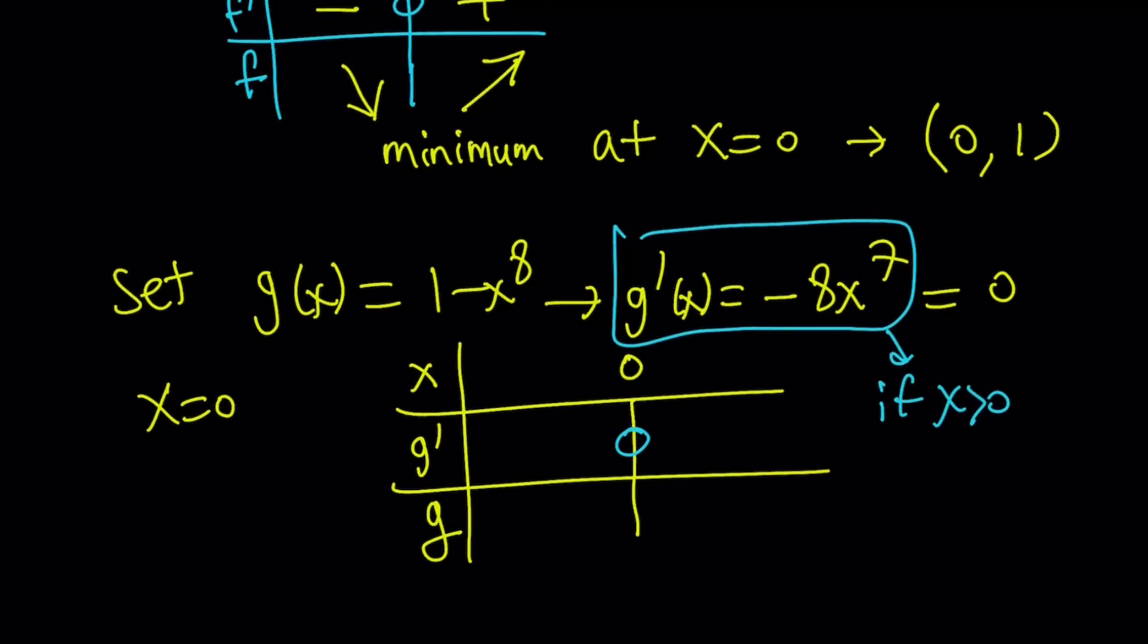So if you look at this derivative real quick, if x is positive, then the derivative, g prime, is going to be negative, right? Because we have a negative sign. If x is positive, x to the 7th is going to be positive, negative 8 multiplied by that is going to be negative. So we kind of have the opposite situation here. We're going to put in a minus sign and a plus sign, indicating that our g is going to increase here and decrease here, making a max at x equals 0.